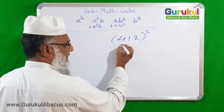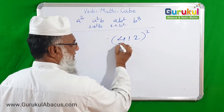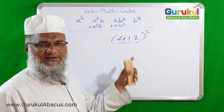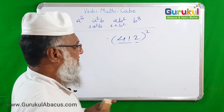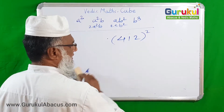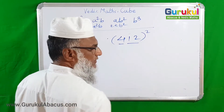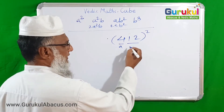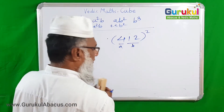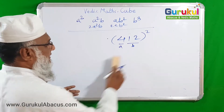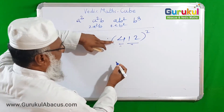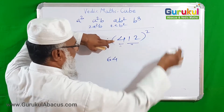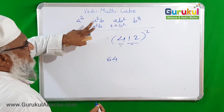Here, I could group as 41 and 2, but finding cube of 41 is a bit hard. So instead I am making a group of 4 and 12. That means A is 4 and B is 12 for this formula. Now cube of A: cube of 4 is 64. We write that here.